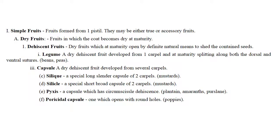Coming to different fruit types: simple fruit means fruit formed from one pistil; they may be either true or accessory fruit. These are again classified as dry fruits, where the coat becomes dry at maturity. Dehiscent fruits are dry fruits which open by definite natural means to shed the contained seeds — like legumes. Legume has one carpel and at maturity splits along both dorsal and ventral sutures, like beans and peas.